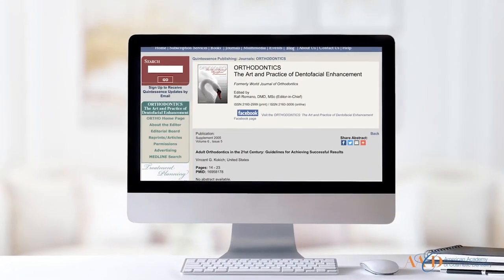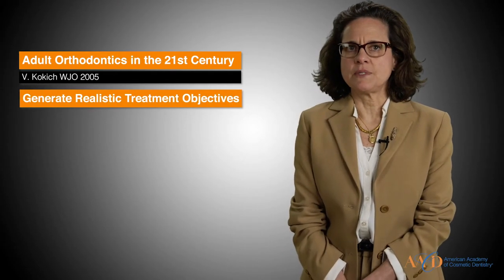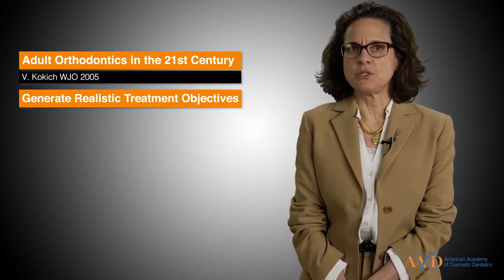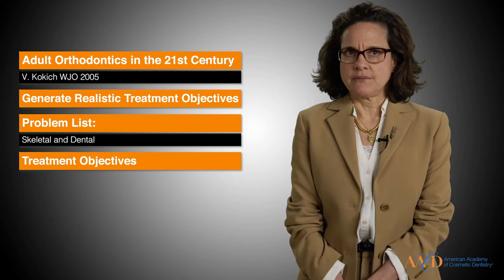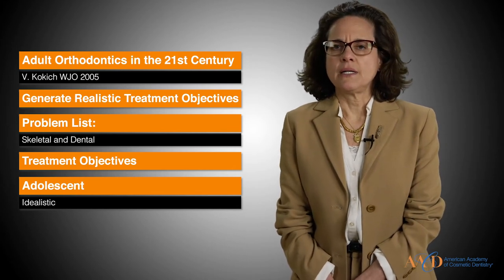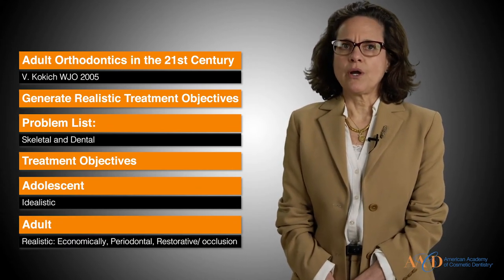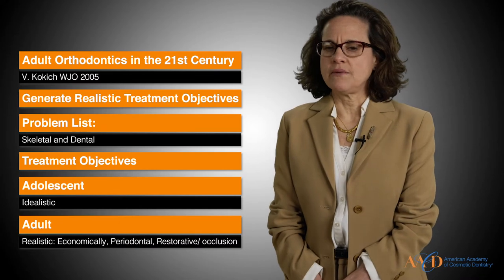Dr. Kalkich, in order to achieve good prudent results, recommended some guidelines and mentioned them in the World Journal of Orthodontics in 2005. The first guideline was to create a realistic objective — defining the diagnosis as a problem list divided into skeletal and dental — and then creating the treatment objective. An adolescent may have idealistic treatment objectives, but in an adult, we have to be aware of their financial situation, their periodontal situation, and restorative and occlusion, so we need to make realistic objectives.